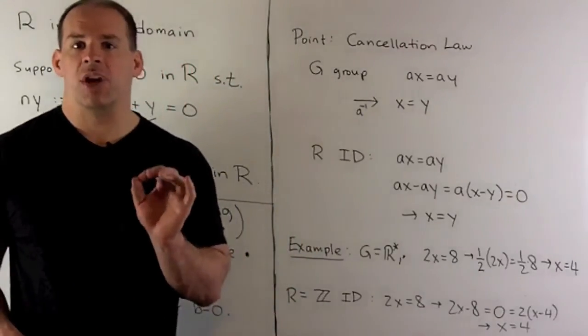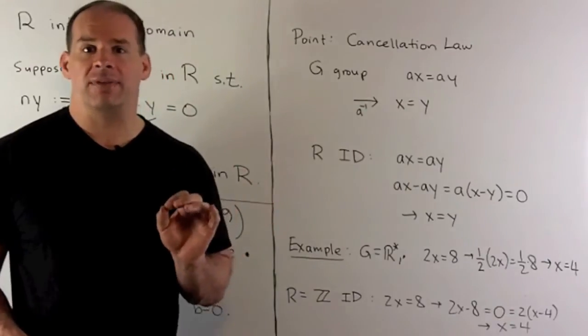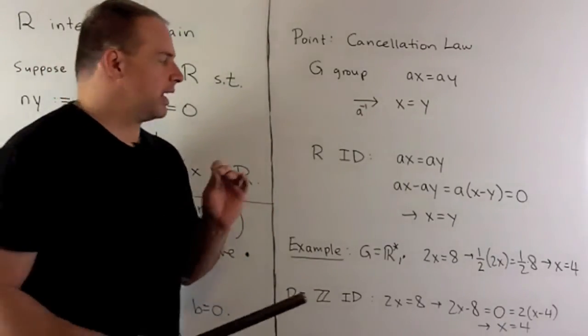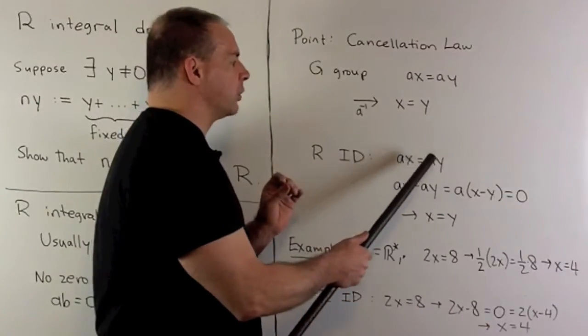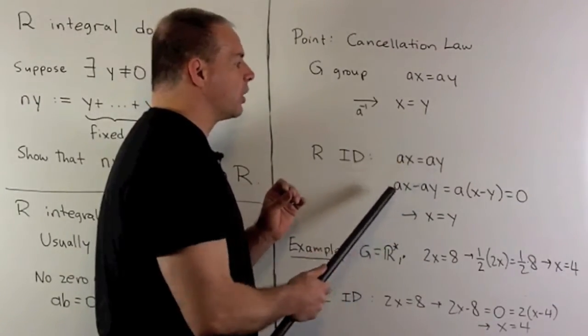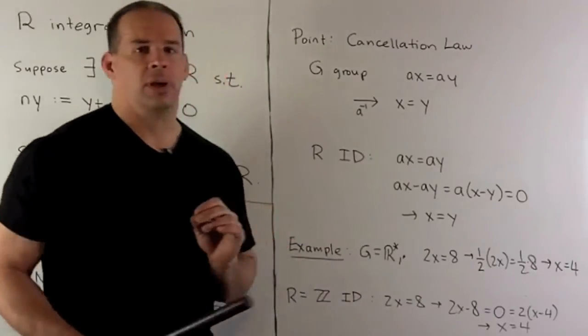So if I insist on a being a non-zero element, then we have to have that y is equal to x. And again, this is this business of cancellation. So if I have ax equal to ay, a is non-zero, then you could just take the a's out.